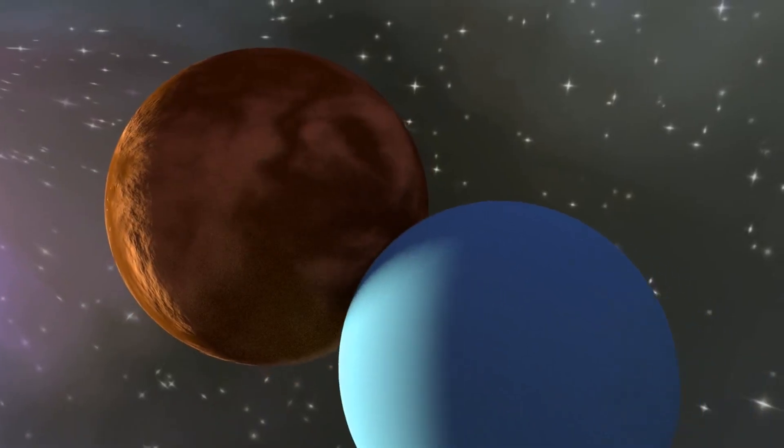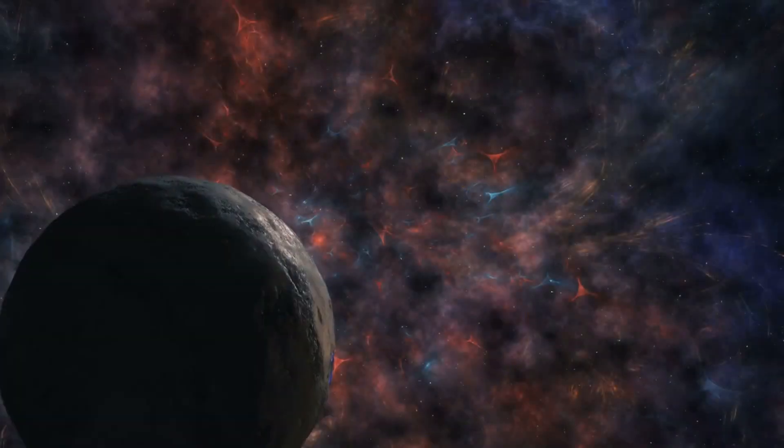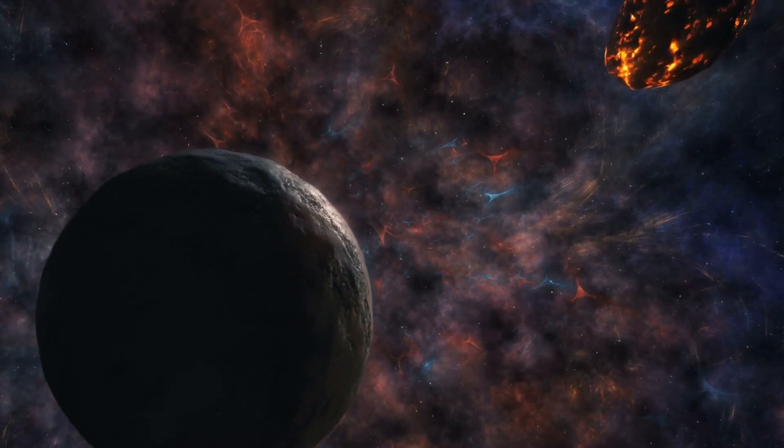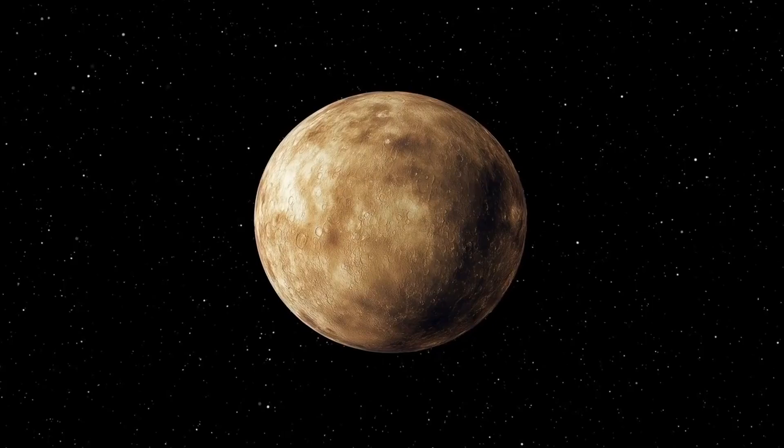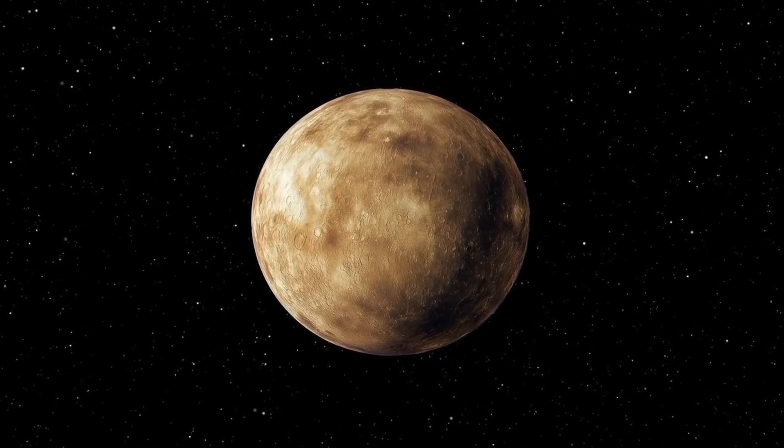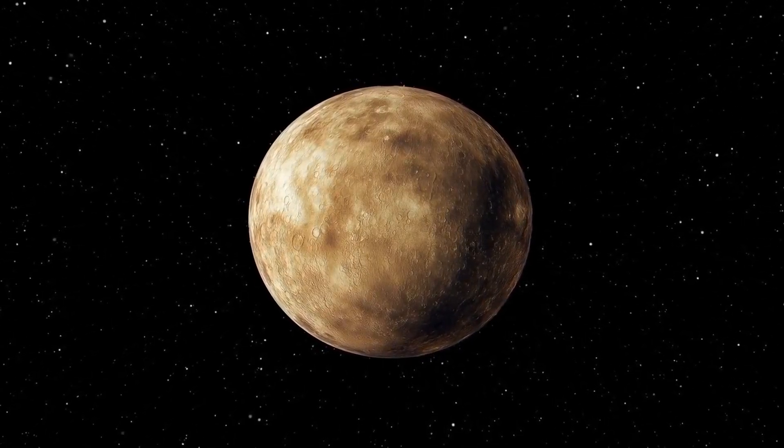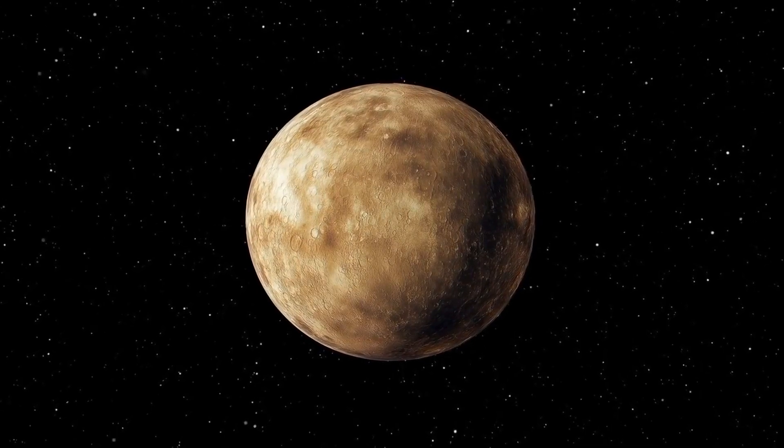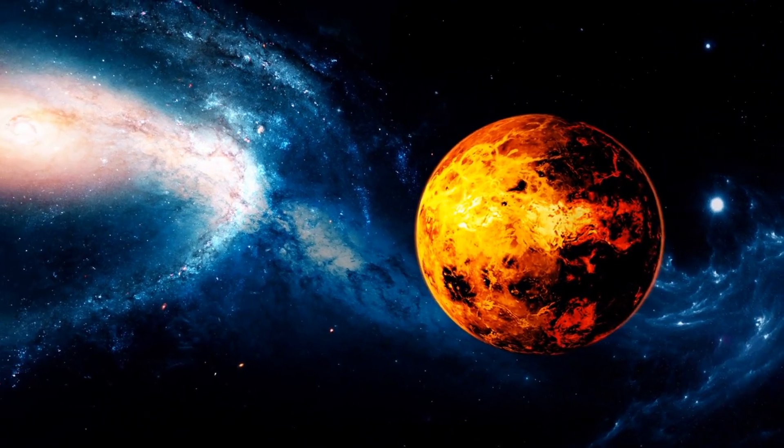The impact of such an event would be cataclysmic. Picture the scene as two worlds, each with their own identity, collide. Mercury, with its iron core, would meet Venus's thick metallic atmosphere and its volcanic surface in a clash that sends shockwaves through the solar system.